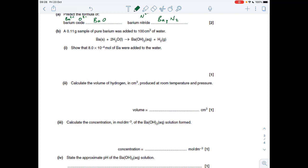Part B: we've got to show that many moles of barium were added to the water. Moles equals mass over Mr: 0.11 divided by 137.3, and that gives us 8 times 10 to the minus 4.